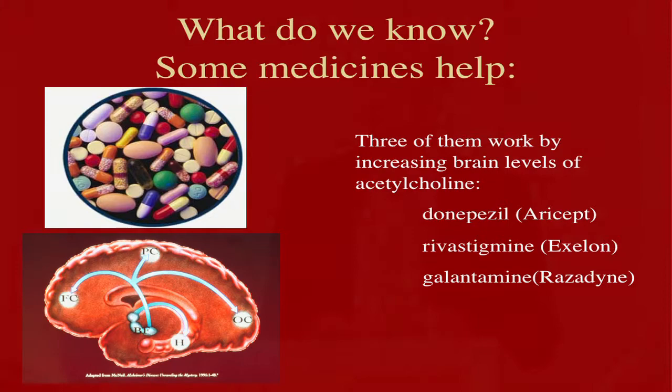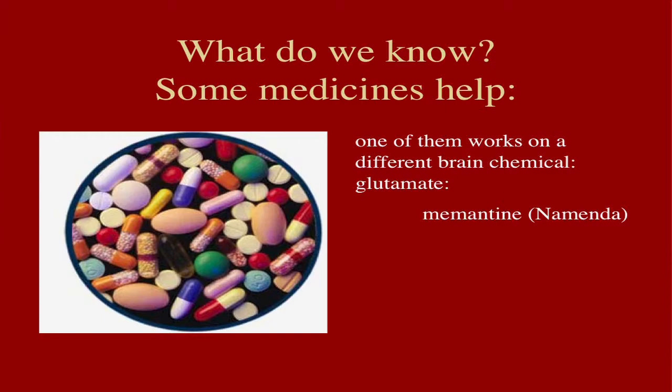These drugs boost levels of that particular neurotransmitter in the thinking and learning centers of the brain. The fourth drug works on a different neurochemical. All these drugs have been approved by the FDA because they have shown some degree of efficacy in double-blind, placebo-controlled trials — a fairly high bar to get FDA approval. These drugs are not as good as we'd like them to be; they really don't change the long-term outcome of the disease. And it's been more than a decade since anything new has been approved — Namenda was the last one, more than ten years ago.